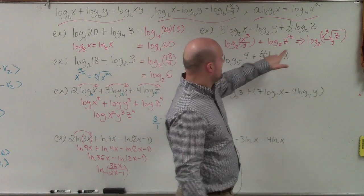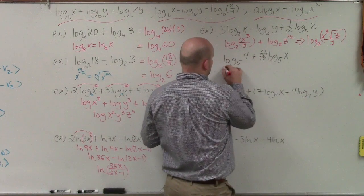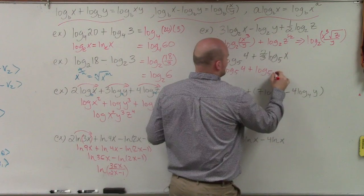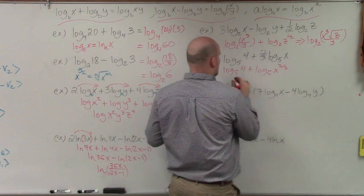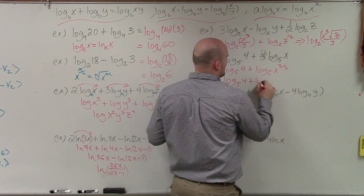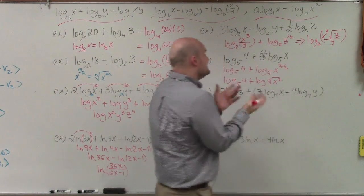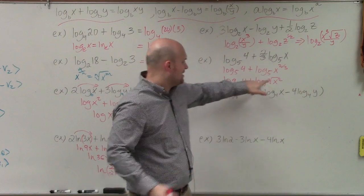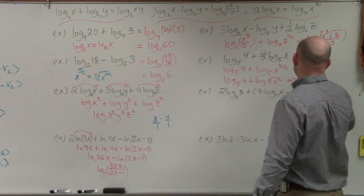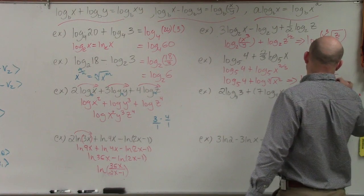Over here, you might want to rewrite using the cube root. So I rewrite this as log base 5 of 4 plus log base 5 of x to the 2 thirds. It's helpful to recognize that x to the 2/3 is the cube root of x squared. Since you're multiplying them, your final logarithmic expression is log base 5 of 4 times the cube root of x squared.